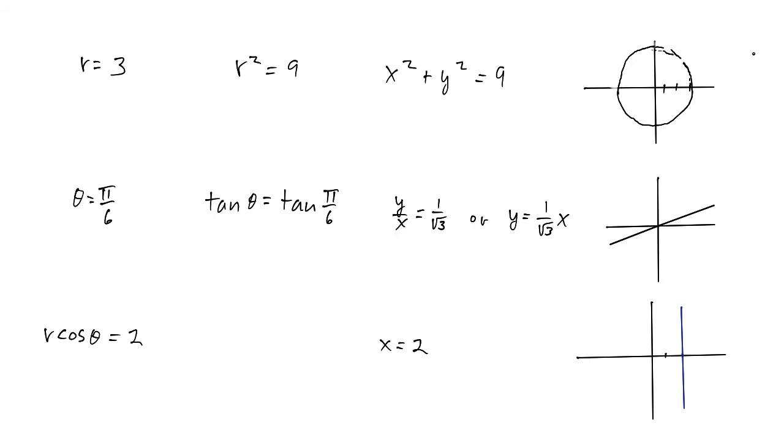Let's look at how you can graph some equations given in polar coordinates. We just have four basic types that we want to be concerned with in this course. The first one is if r is equal to a constant.